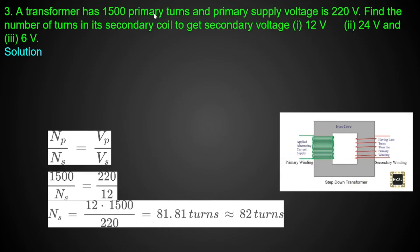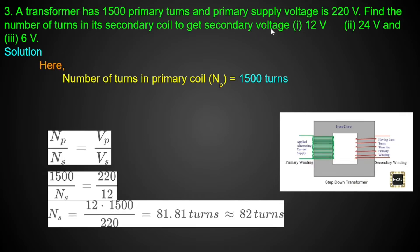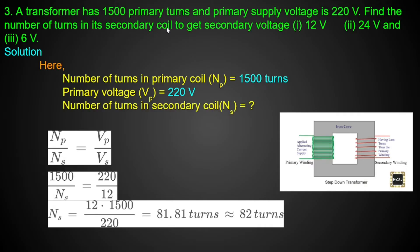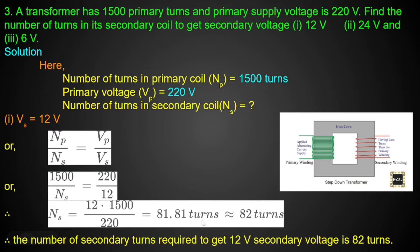The next question: a transformer has 1500 primary turns and a supply voltage of 220 volts. Find the number of turns in its secondary coil if the secondary voltage Vs equals 12 volts. We solve using the transformer formula to find Ns. Then we check with 24 volts and 6 volts as additional cases.